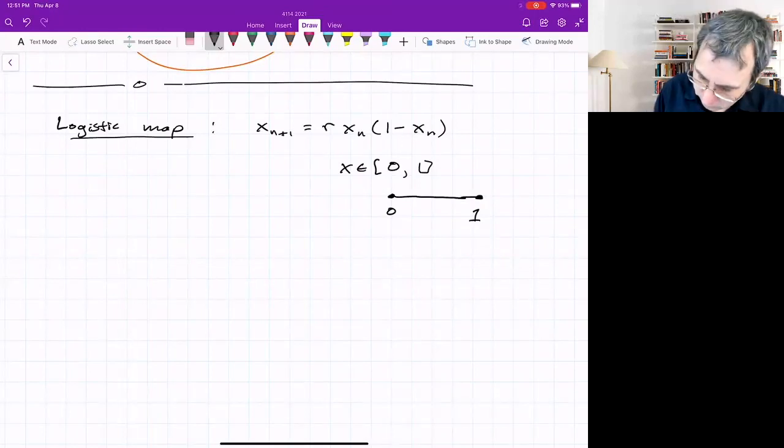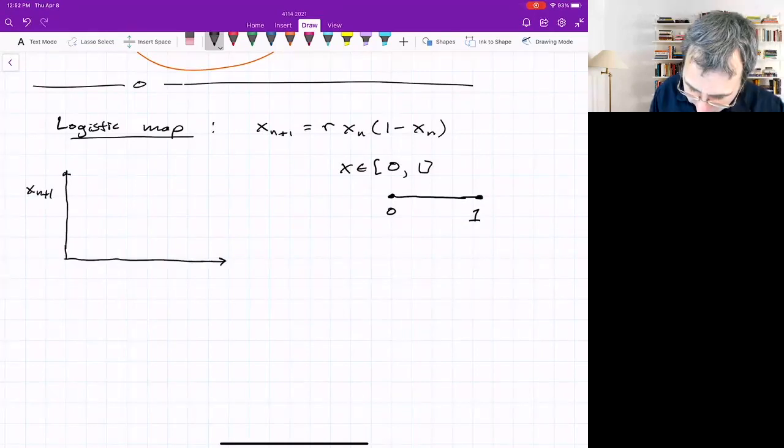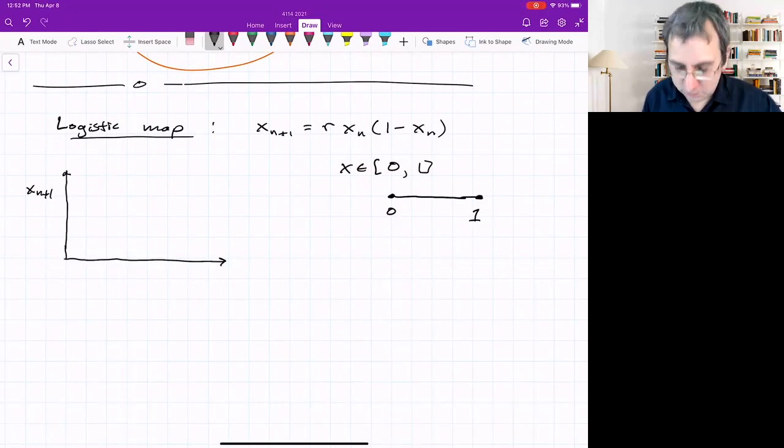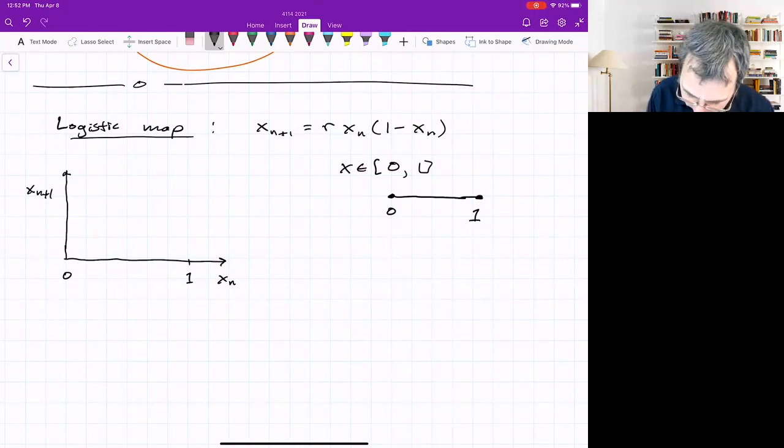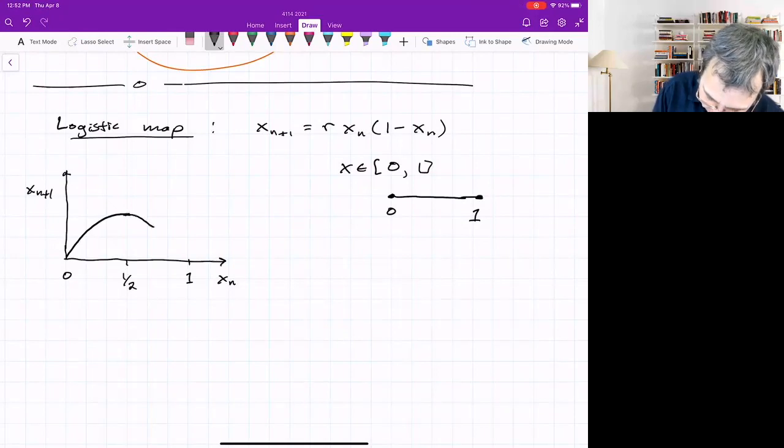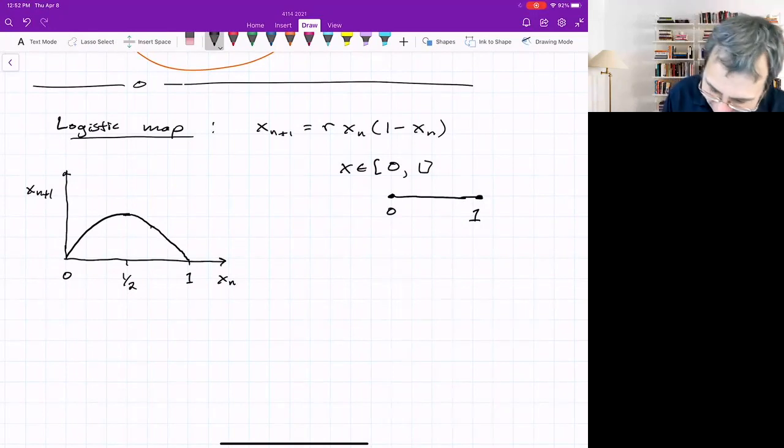What is r? If you were to plot this, you can plot X_{n+1}. This is like the graphical method for one-dimensional differential equations. There's 0, there's 1. Where does this peak? It actually peaks at the halfway mark, 1/2. It's a parabola that goes up from 0 and goes back down to 0 symmetrically, peaking at r/4.